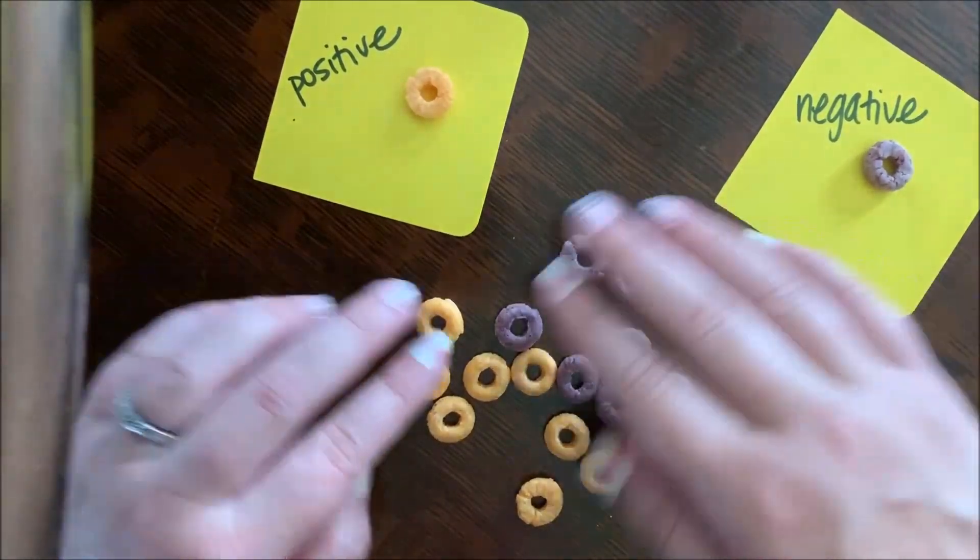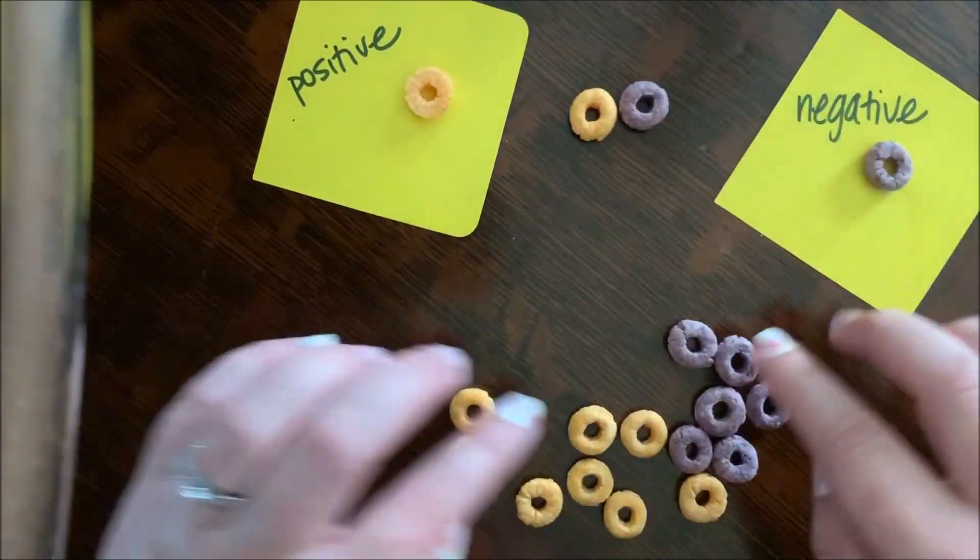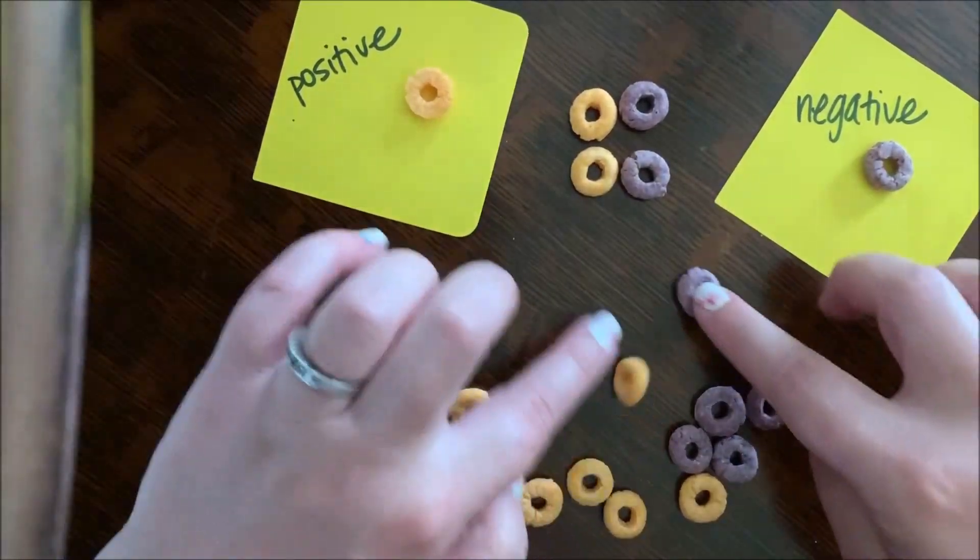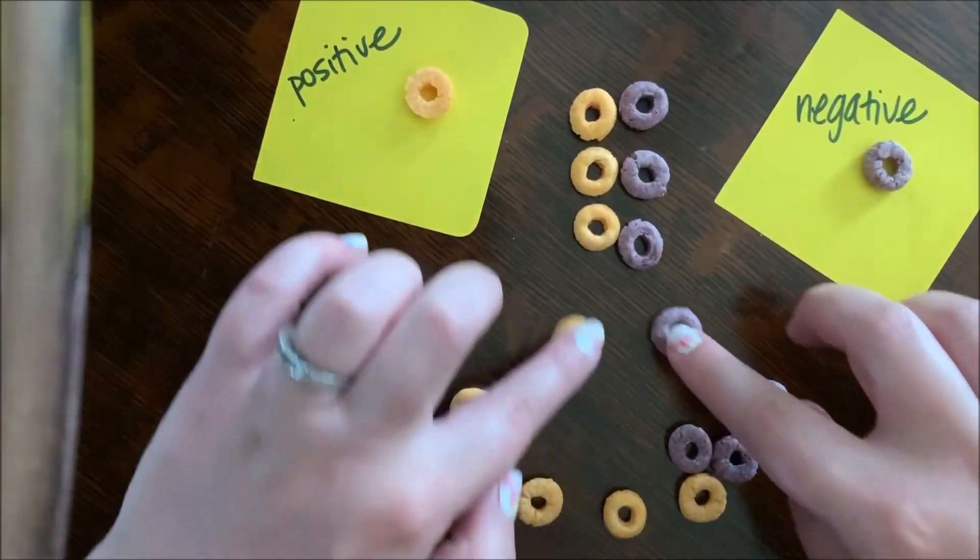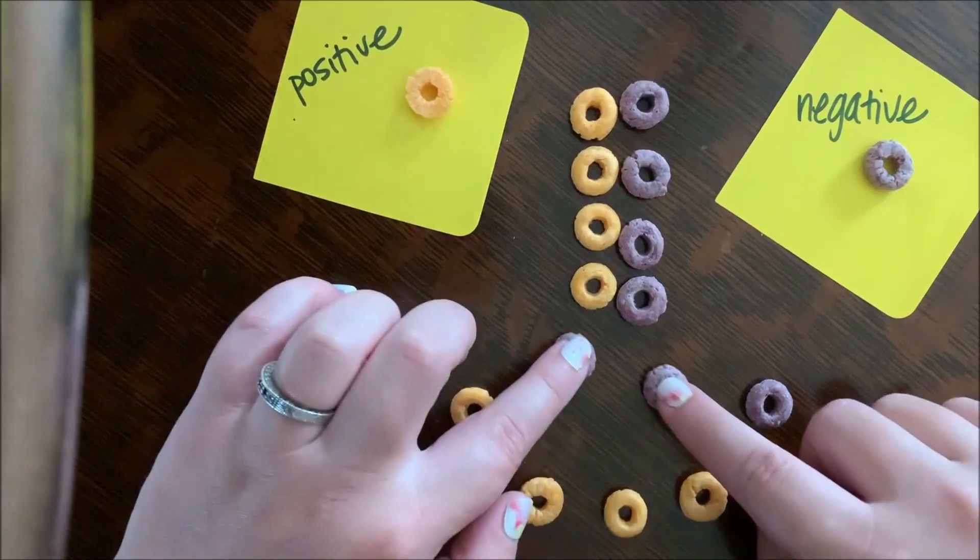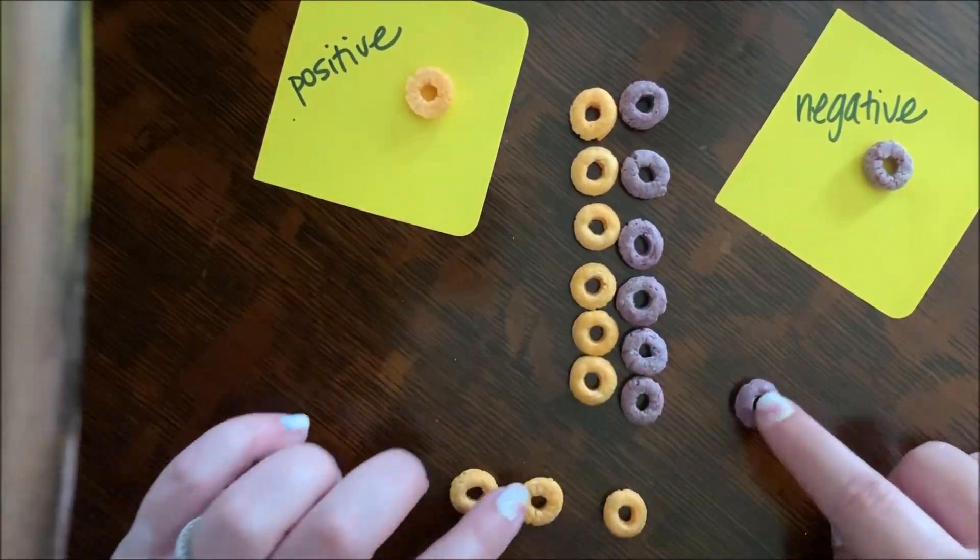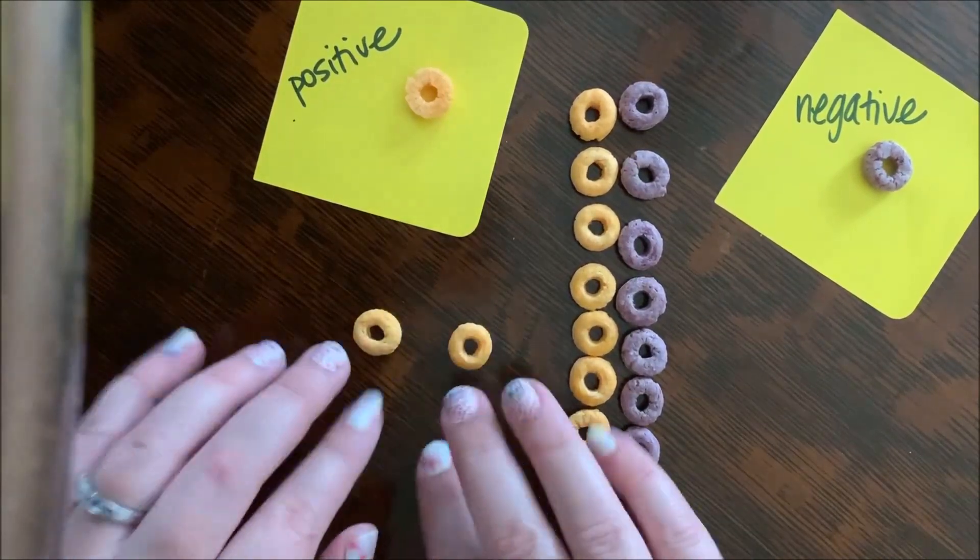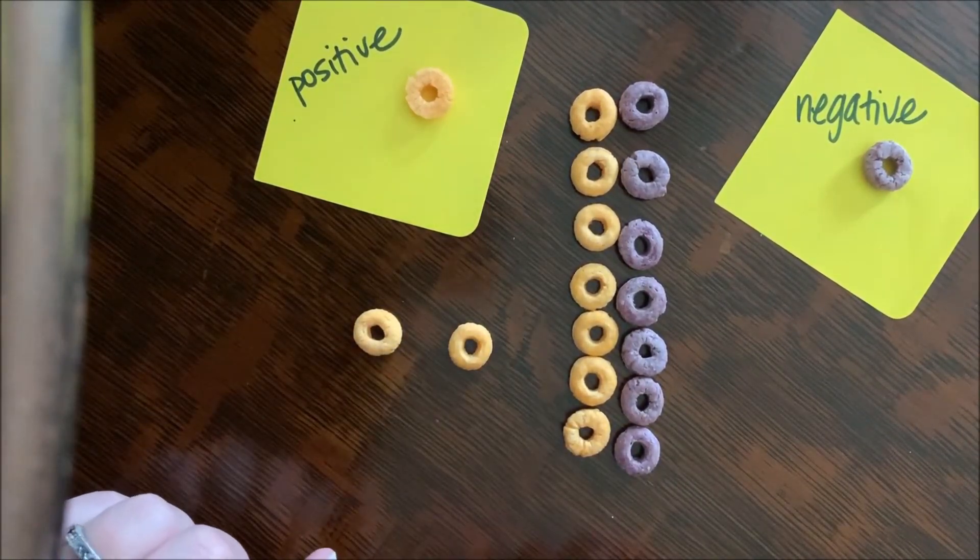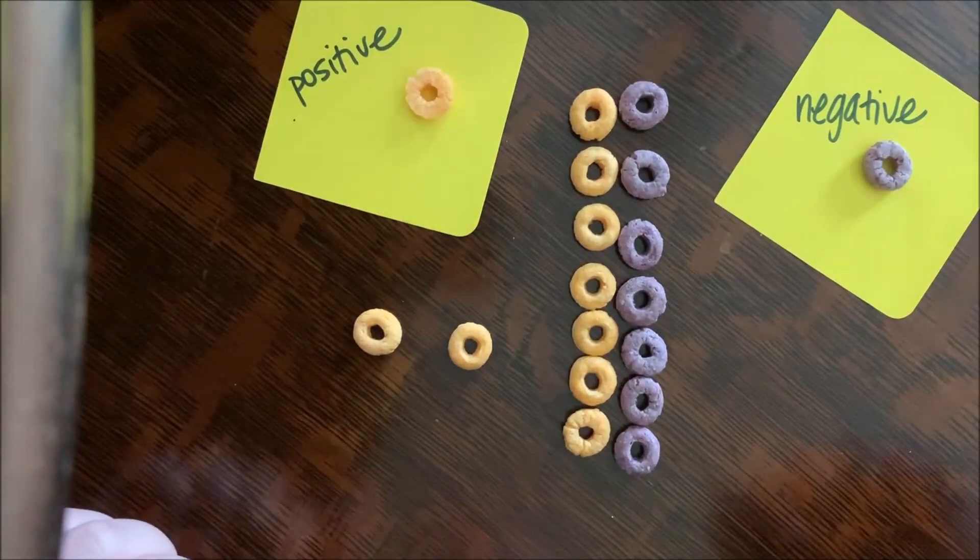And let's start making some zero pairs. I've got one, two, three, four, five, six, seven zero pairs, and these two little positives left over. So let's think about what this means.